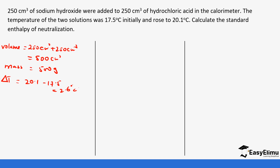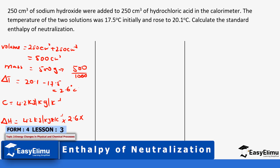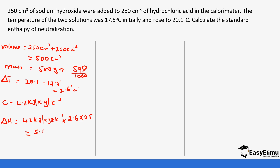We are asked to calculate the standard enthalpy of neutralization. Using a specific heat capacity of 4.2 kJ/kg/K: heat change = 4.2 × 2.6 × (500 ÷ 1000) = 4.2 × 2.6 × 0.5 = 5.46 kilojoules.